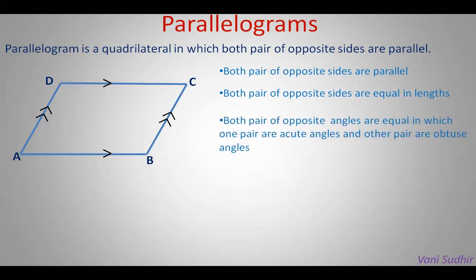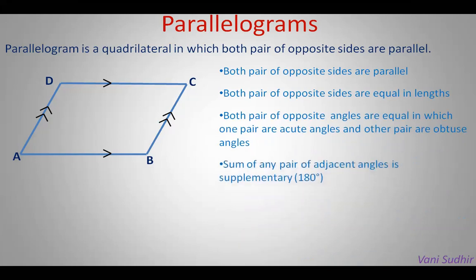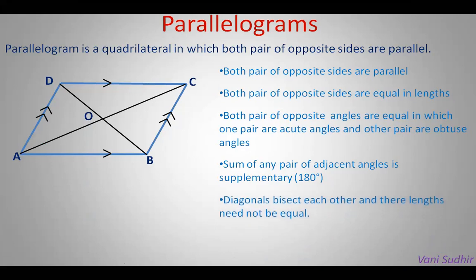Both pairs of opposite angles are equal — one pair is acute angles A and C, and another pair are obtuse angles B and D. The sum of any pair of adjacent angles is supplementary, meaning 180 degrees: A plus B equals 180, B plus C equals 180, C plus D equals 180, and A plus D equals 180. Diagonal properties are very important to identify any quadrilateral.